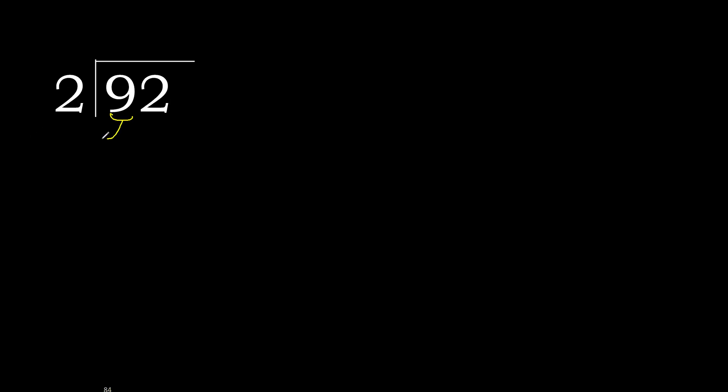92 divided by 2. We start with 9 — it is not less, so we work with 9. We need to find which number, when multiplied by 2, is nearest to 9 but not greater.